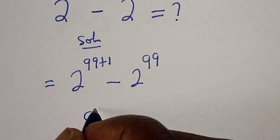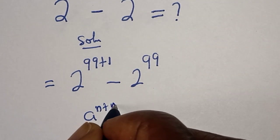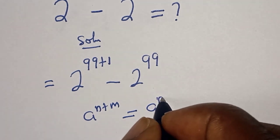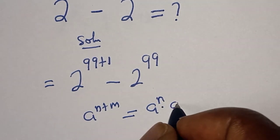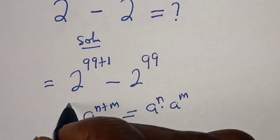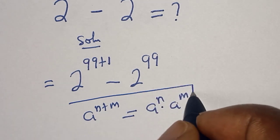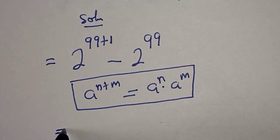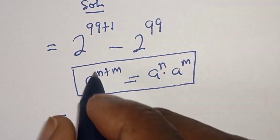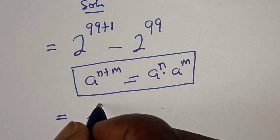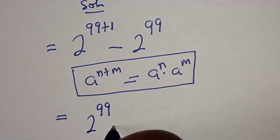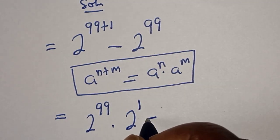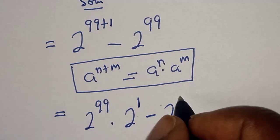a to the power of n plus m is equal to a to the power of n multiplied by a to the power of m. So this is equal to 2 raised to power 99 multiplied by 2 raised to power 1, minus 2 raised to power 99.